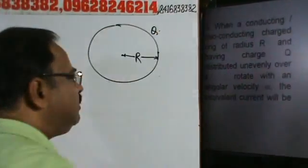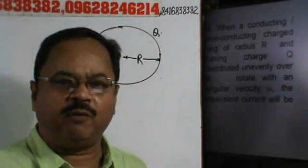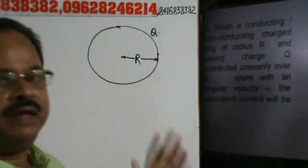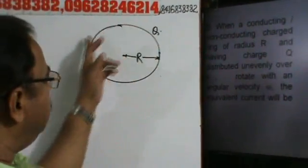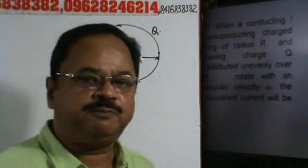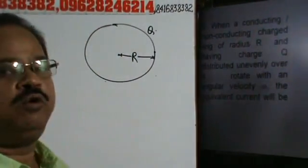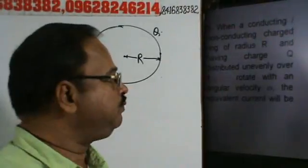Aor Q ka distribution, whether it is evenly, uniformly or non-uniformly, ye kuch nahi hai. Chai Q yek jaga ho, ya poore ring par uniformly spread kya gaya ho, ya jahan tahahan ho, total sum of charge is Q. Right?